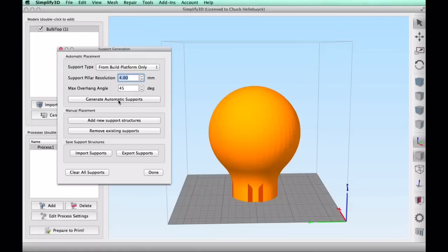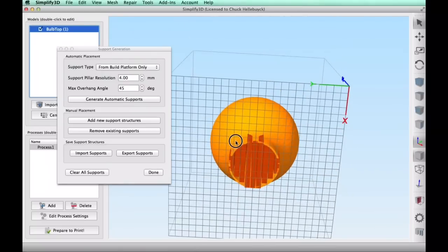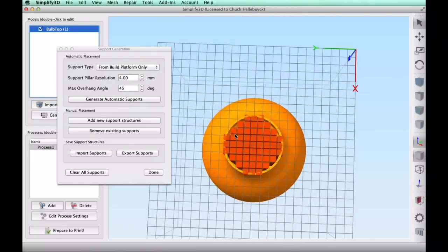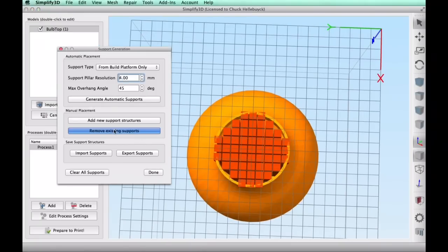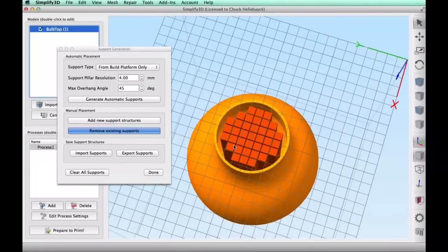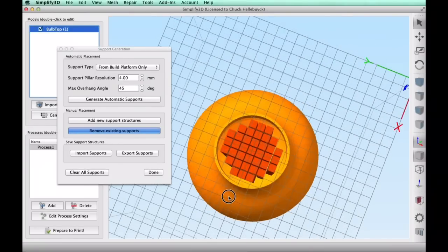So I went back, used the support tool in Simplify3D, generated automatic supports, and then just removed the existing supports that are going into the wall because I wanted this to be easy to break away. I could only get to it from the bottom. So this is what I did. This is the way it looked and I think this will work out perfect.